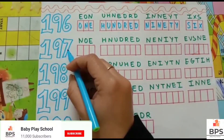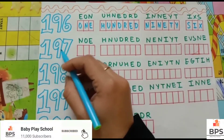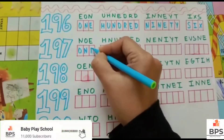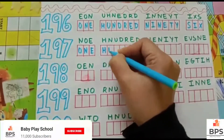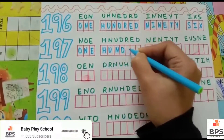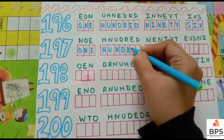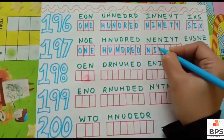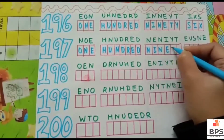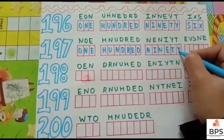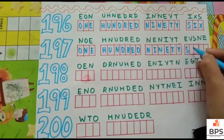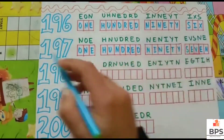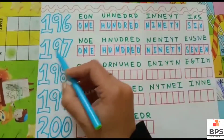197. O-N-E, 1, H-U-N-D-R-E-D, 100, N-I-N-E-T-Y, 90, S-E-V-E-N, 7. One hundred ninety-seven — 197.